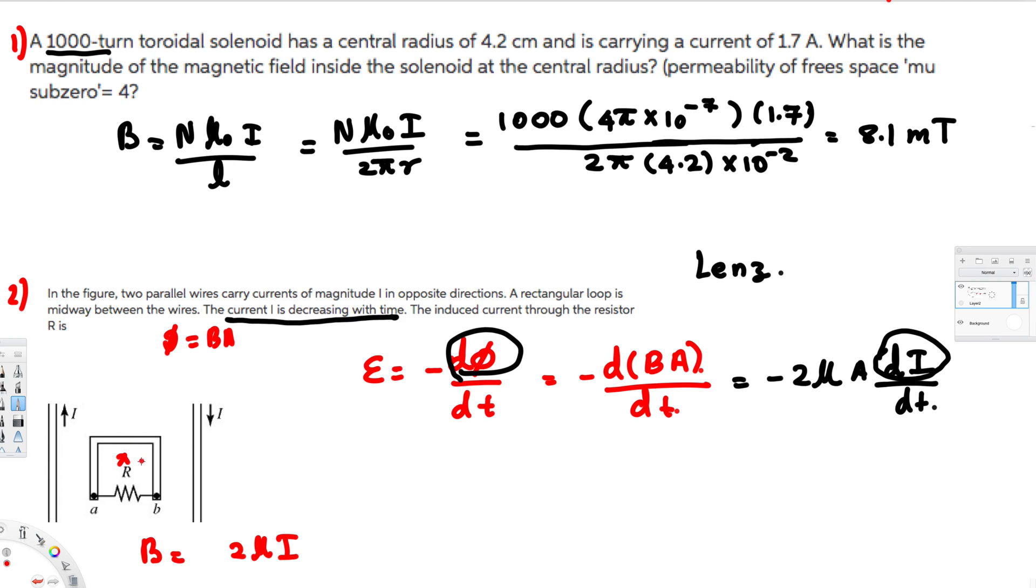Since it has to go inside, if you use your right-hand rule and curl your hand towards inside, you'll see the current will go clockwise. If it's going clockwise, it should go through B to A. So the induced current goes through B to A, and that's the answer for this question.